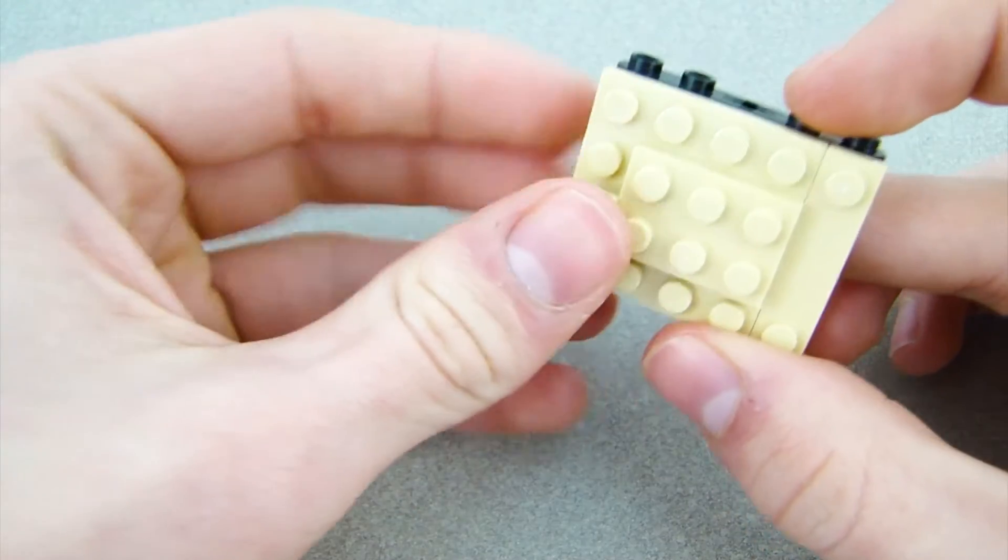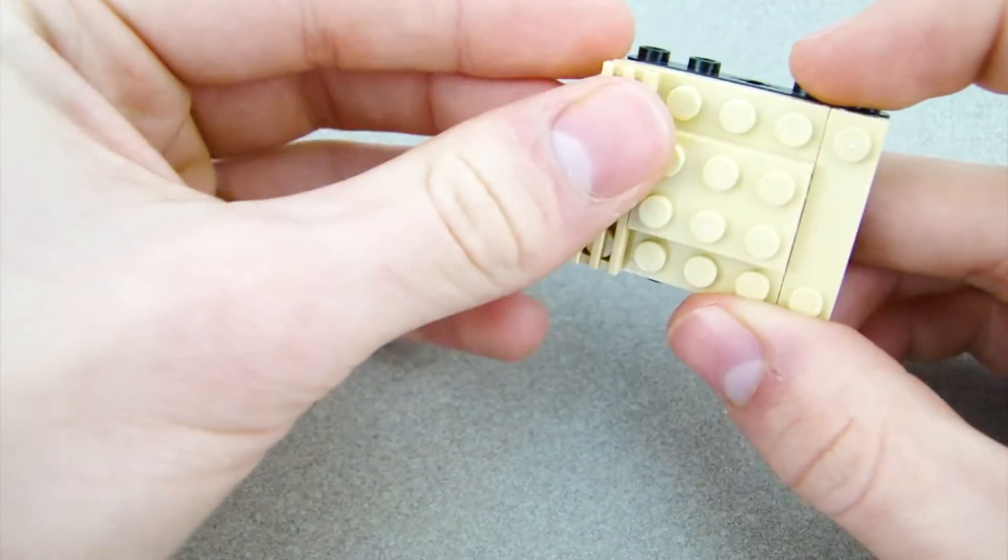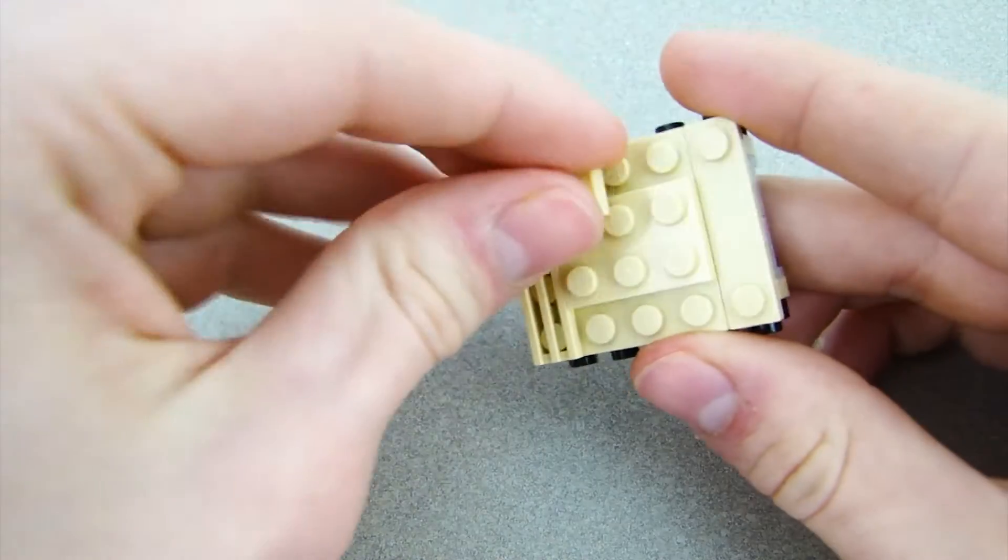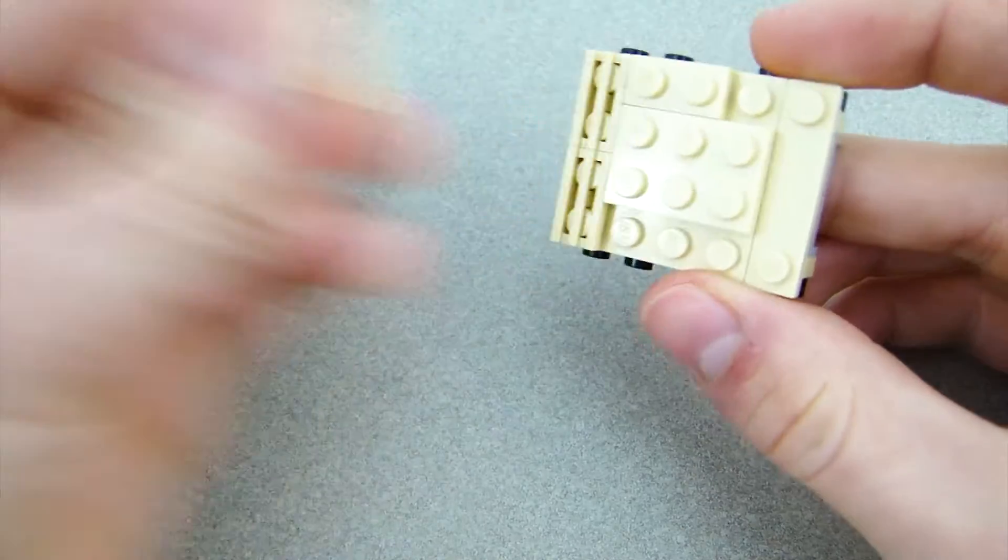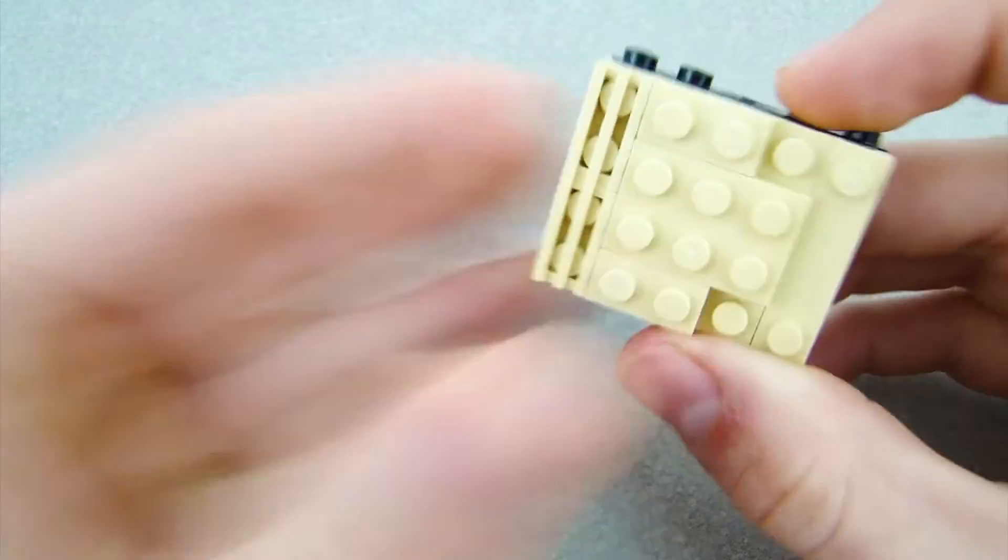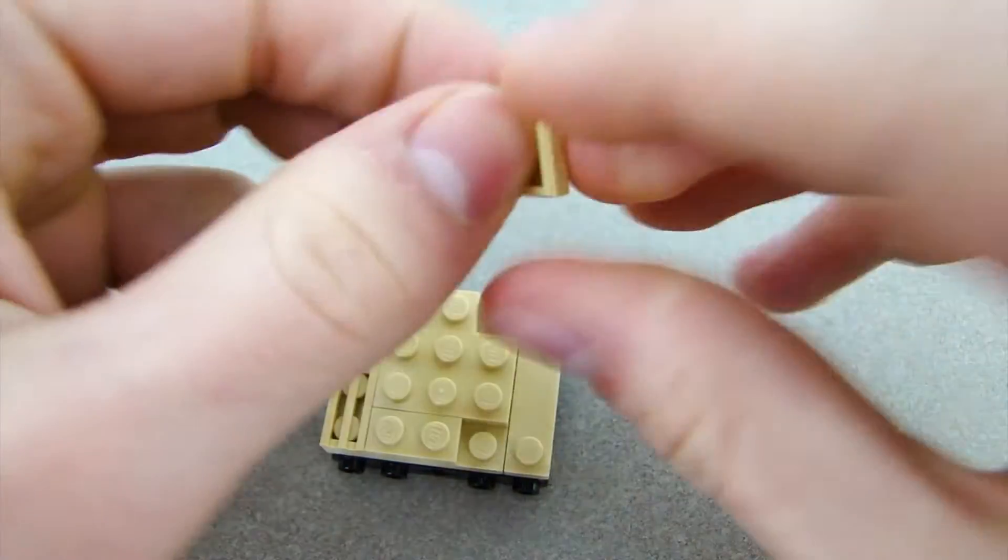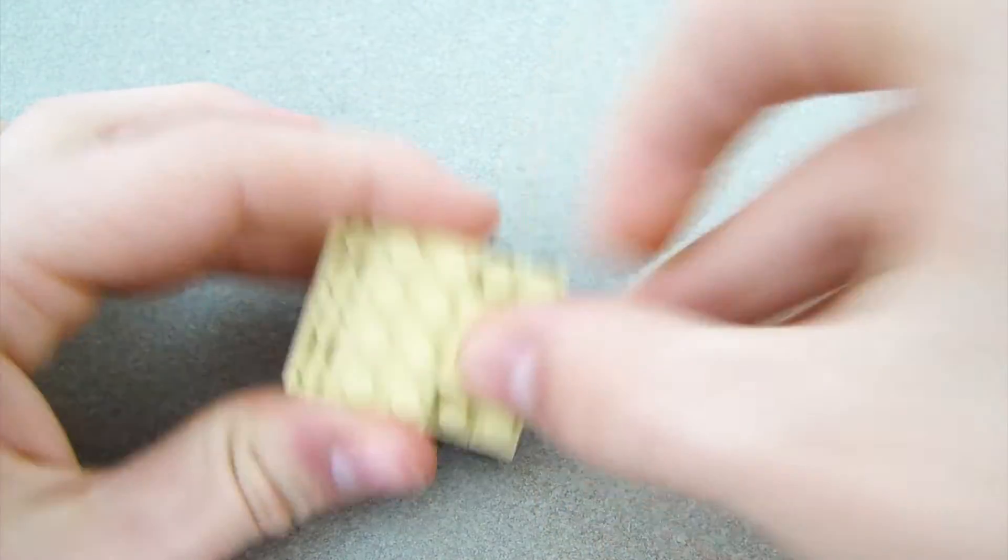Then on the back with these studs, put two vents. And then right here and right here, two 1x2 plates with a tile slapped on right there. Boom, like that.